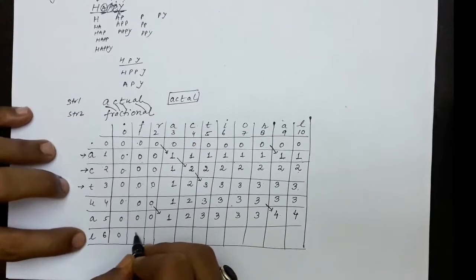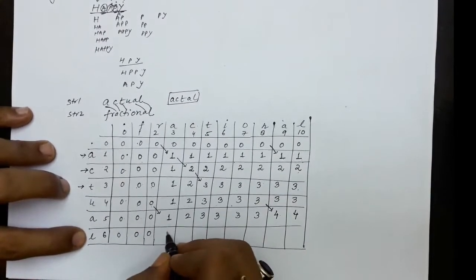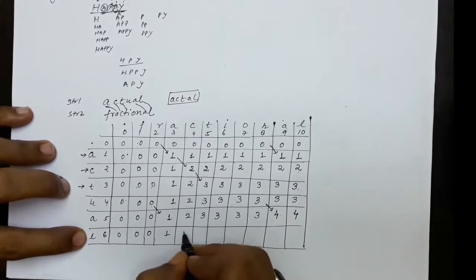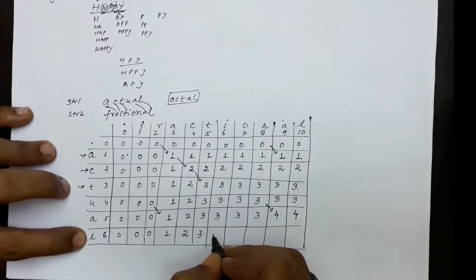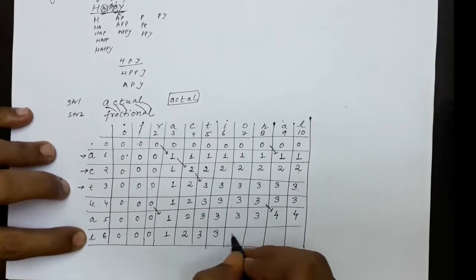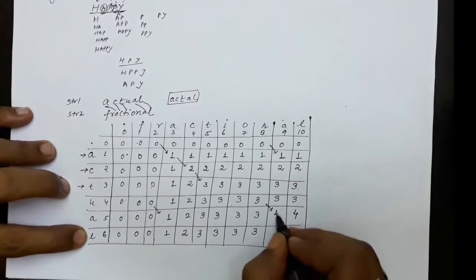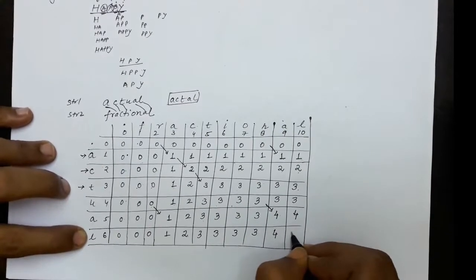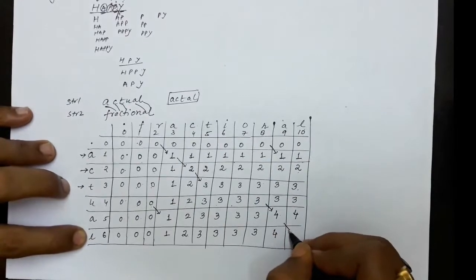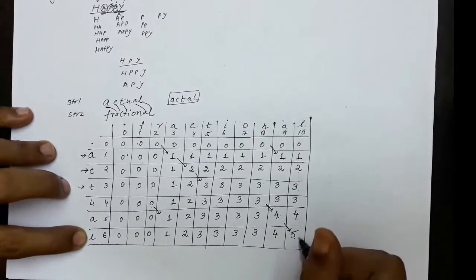After this, L and F — no match, 0. L and R — no match. L and A — no match, maximum of 0 and 1 is 1. L and C — no match. L and T — no match, maximum of 2 and 3 is 3. L and I, O — maximum of 3 and 3. L and N — no match. L and A — no match. L and L has a match — diagonal value plus 1 gives 5. The table is now complete.